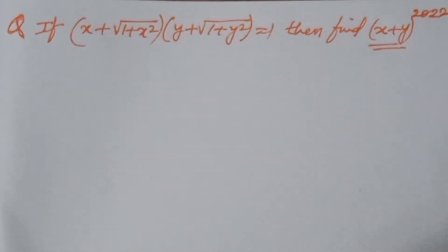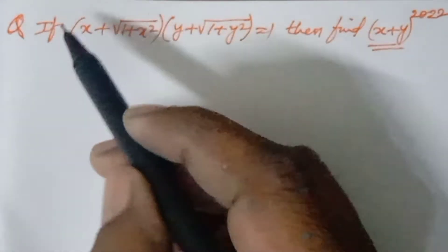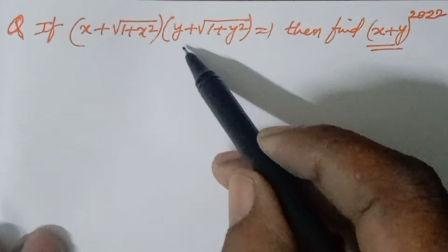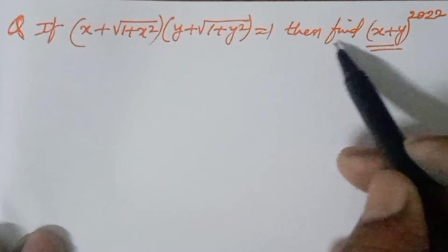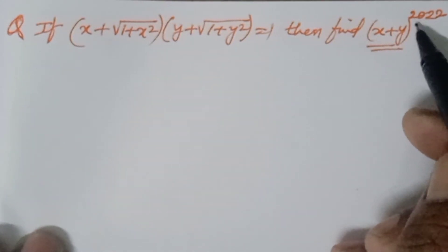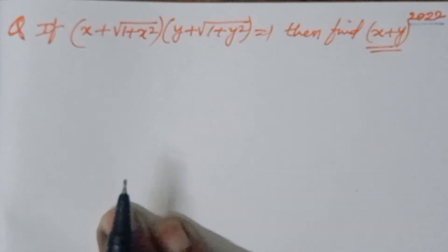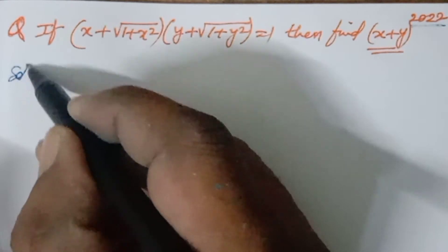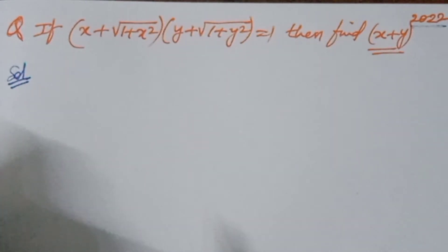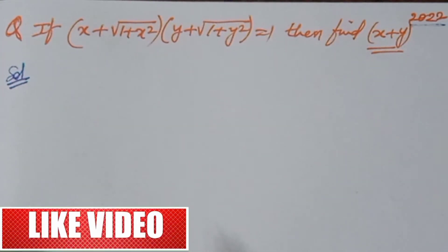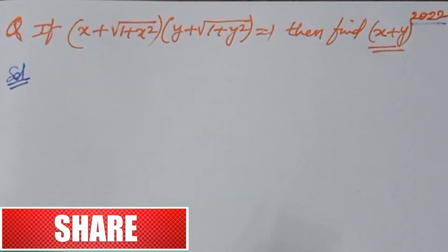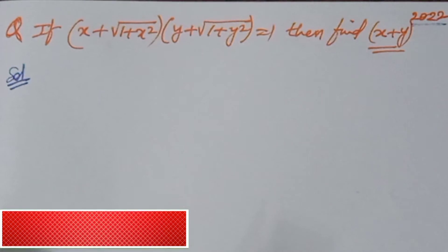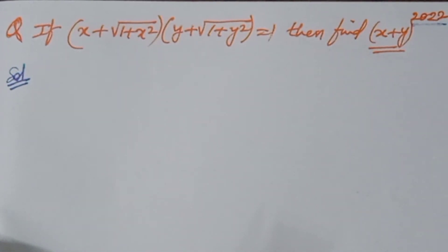Good morning, welcome to INC GMAX. The question is: if (x + √(1 + x²)) × (y + √(1 + y²)) = 1, then find (x + y)^2022. This is an olympiad problem — logical and critical problems will be uploaded which are very useful for gaining subject knowledge. Those who are new to this channel, subscribe and share. Pause the video for 10 seconds and see whether you can get the solution.